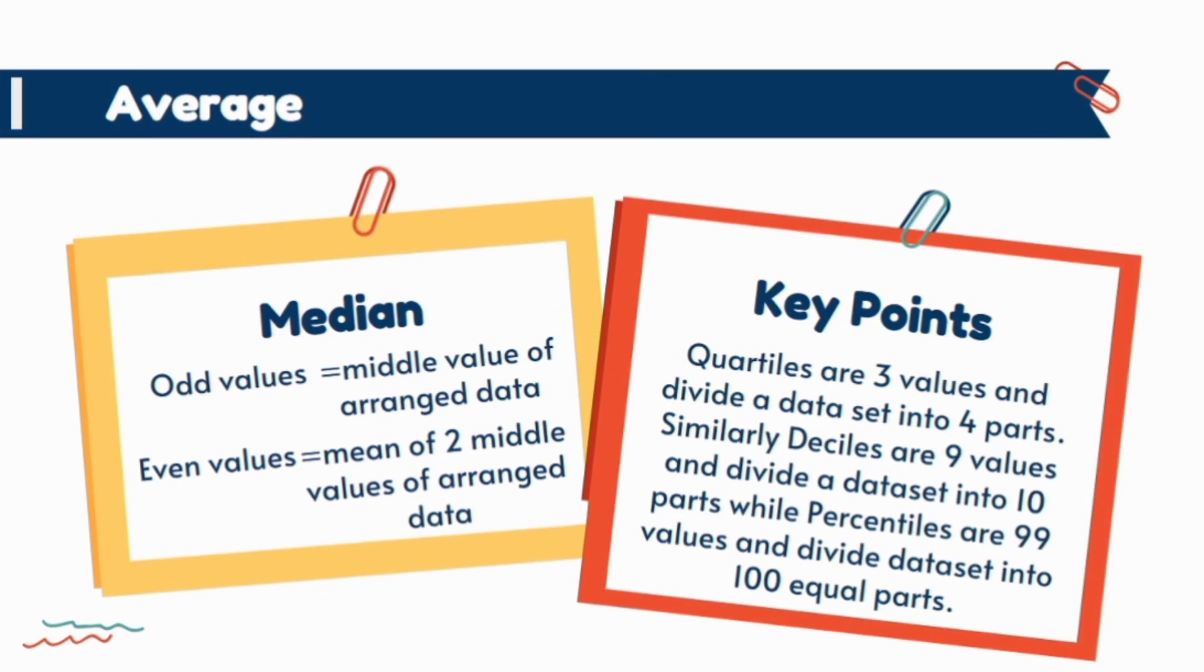Median is preferred for ordinal scale and it is the value that divides the arranged data set into two equal parts. So to calculate median we first need to arrange data set in order from the lowest to the largest value.